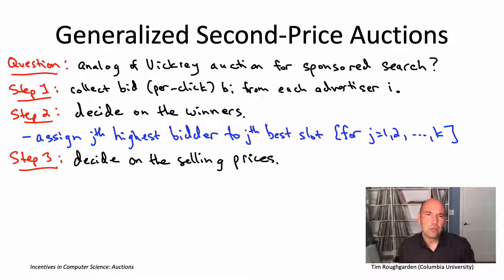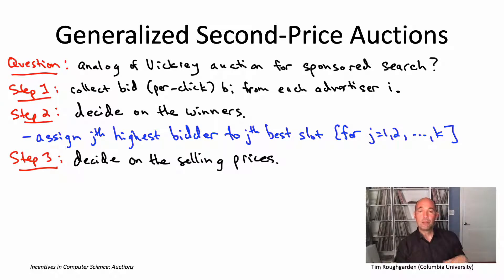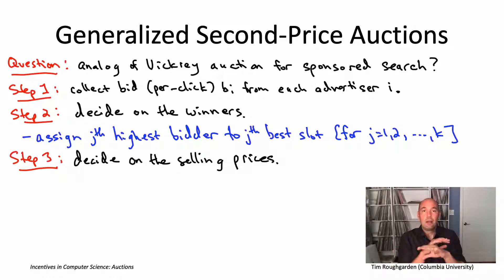Let's go back to the intuition for the truthfulness of the Vickrey auction. What was driving that truthfulness result was that the auctioneer delegated bidding effects — the auctioneer got to see all the bids, and if you're going to be the winner, the auctioneer says: in the case that you win, I'll shade your bid down to the minimum amount necessary to continue to win the auction. That's why it was a truthful auction — you're happy to delegate your bid to this altruistic and all-knowing third party, the auctioneer, to bid on your behalf.